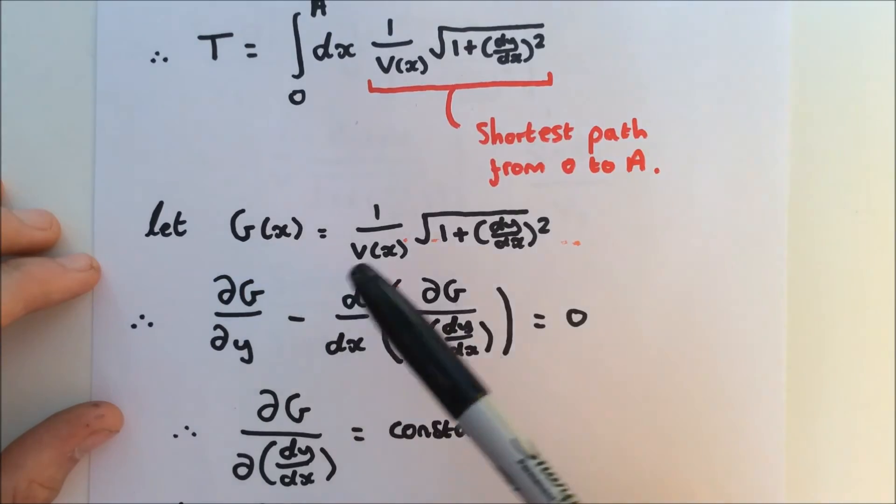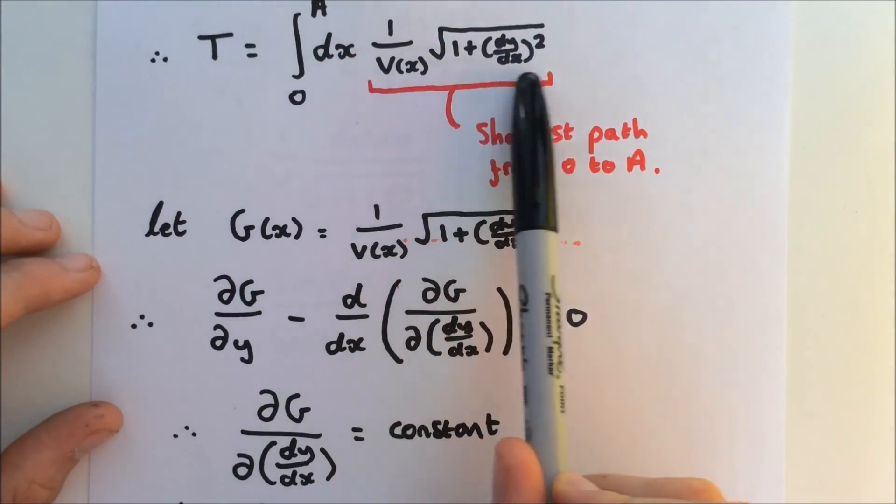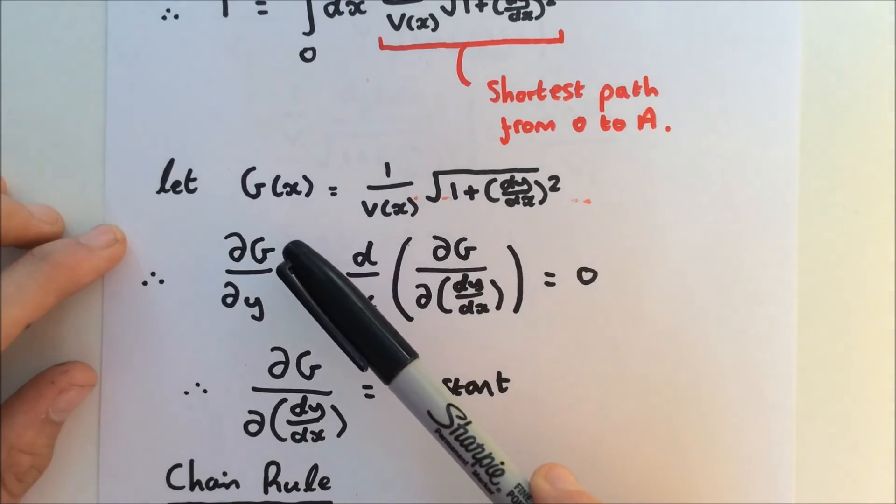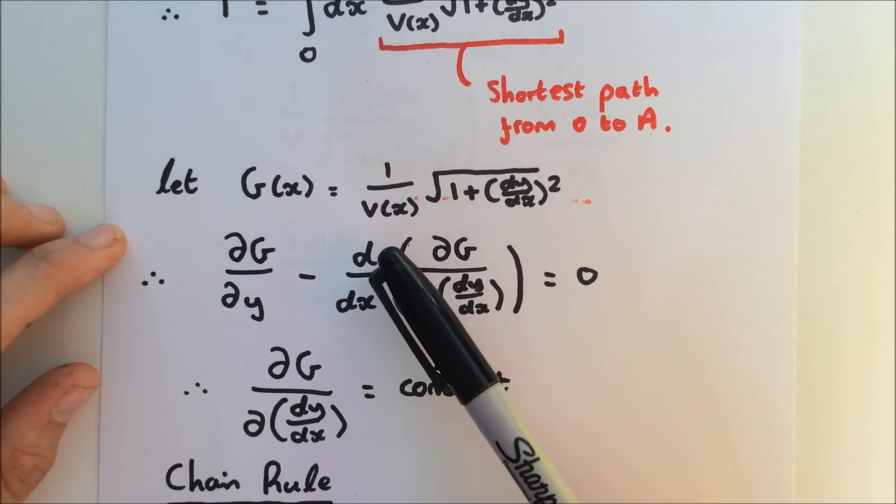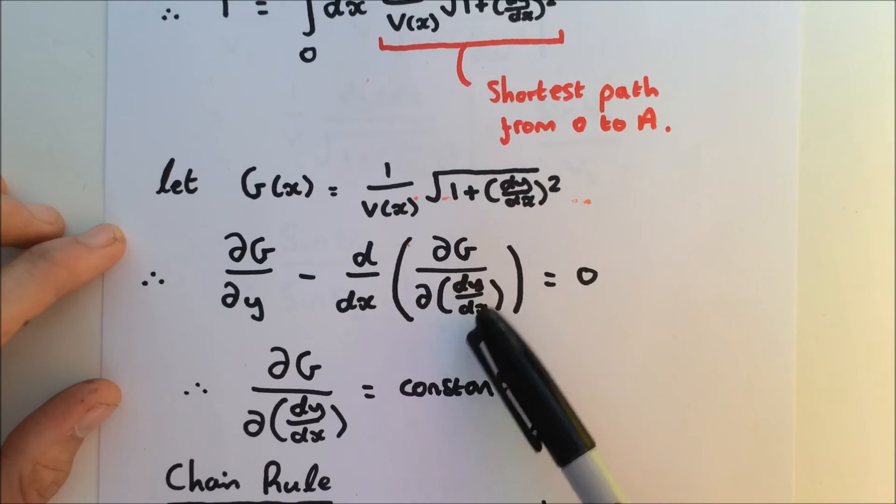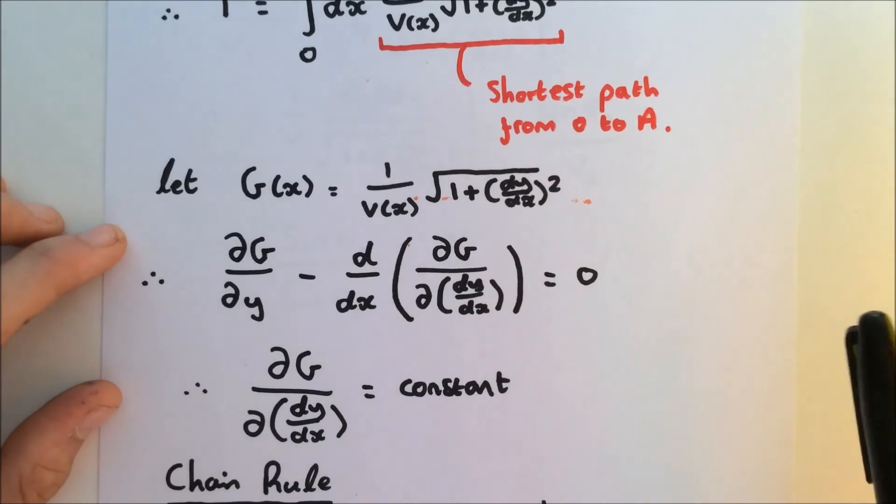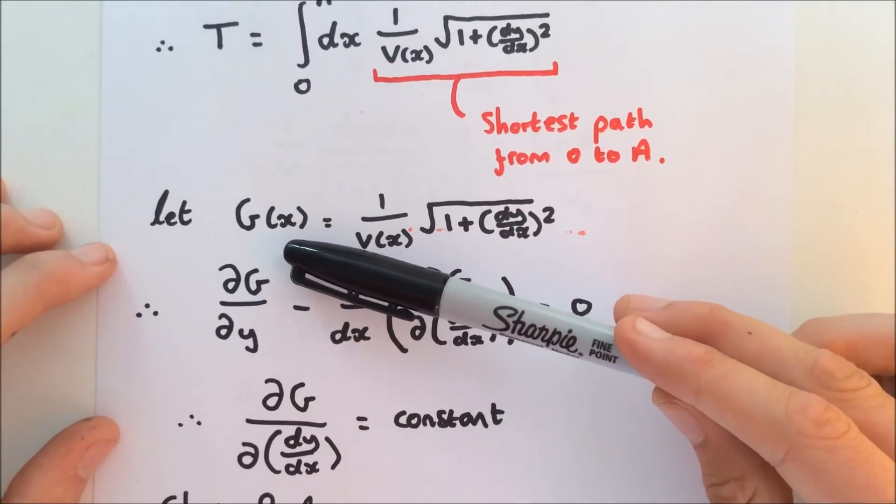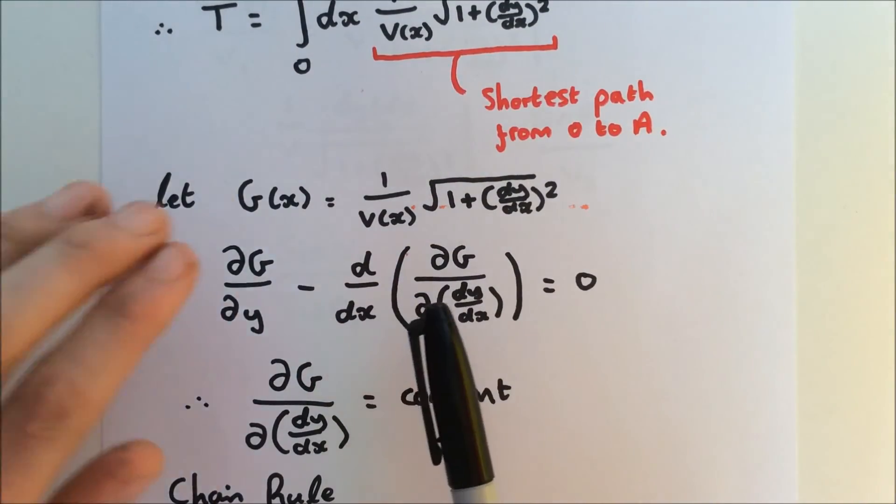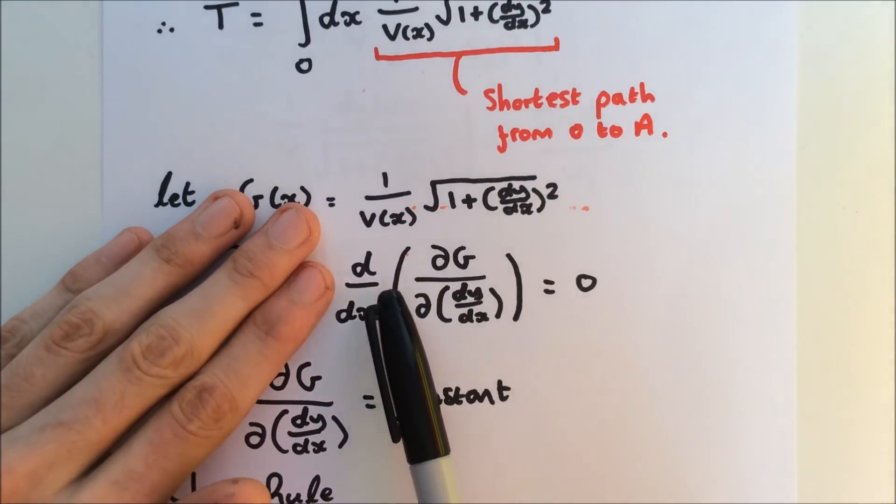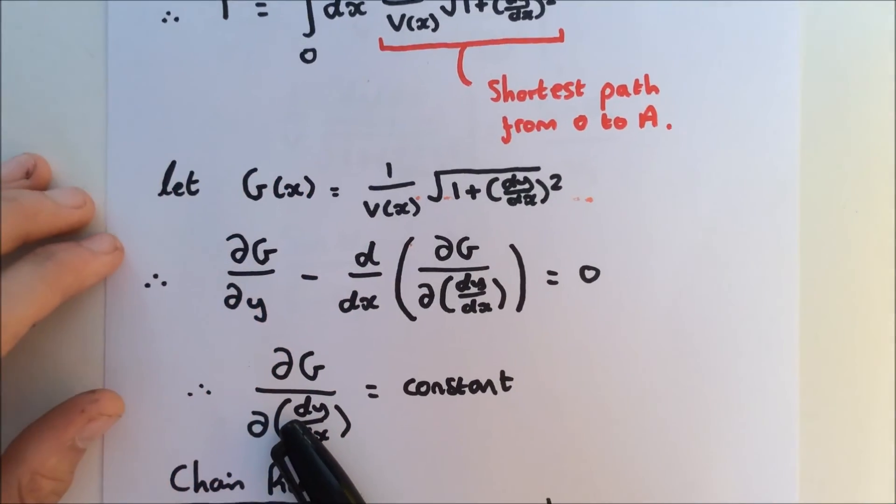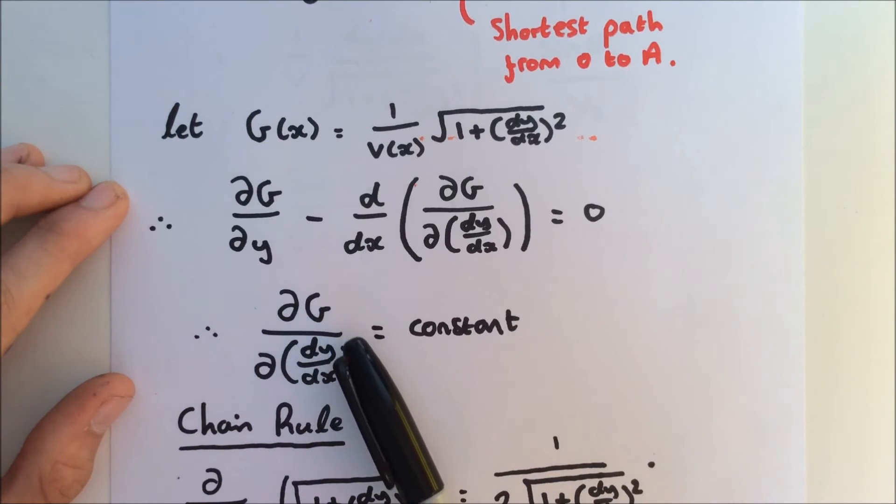So let G(x) equal this, our integrand: 1 over vx times the square root of 1 plus dy/dx squared. And using the Euler-Lagrange equation, we can say that the partial derivative of G with respect to y minus the derivative with respect to x of the partial derivative of G with respect to dy/dx is 0. If you've not noticed already, this is 0 because G is only a function of x. So that becomes 0. Therefore, we can conclude that the derivative of this must be 0. The derivative of a constant is 0. So therefore, this partial derivative of G with respect to dy/dx is a constant.